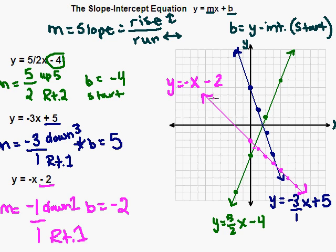So again, we started down at negative 2 on the y-axis and then applied our slope, going down 1 to the right 1. This is graphing the linear equation y equals mx plus b, or the slope-intercept equation. If you have any questions, please let me know.